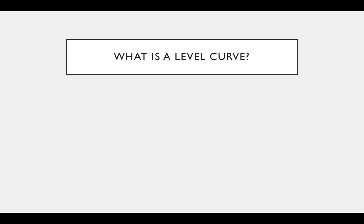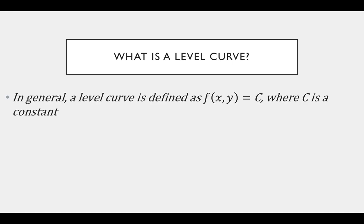To begin with, how do you define a level curve? A level curve is simply defined as setting a function of two independent variables equal to some constant. We can visualize what this means by setting z — the third Cartesian coordinate — equal to the function f(x, y), where x and y are the independent variables. If we plot z = f(x, y), we get a surface defined by the xy plane.